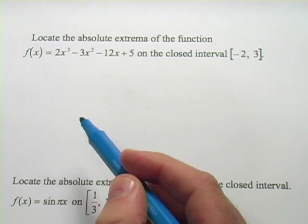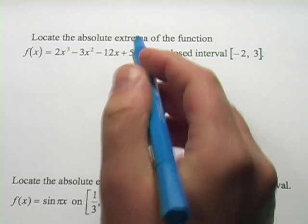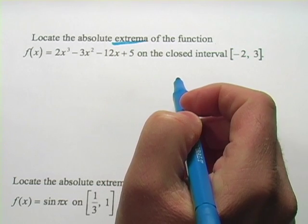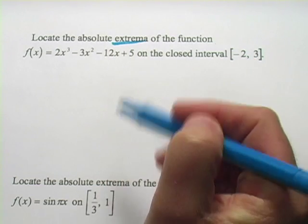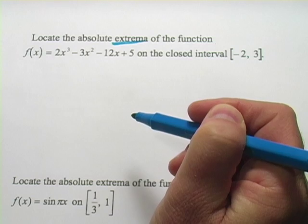Here we have some problems about finding absolute extrema. The extrema of a function are the high points and the low points, so where the function is the biggest and where it's the smallest.